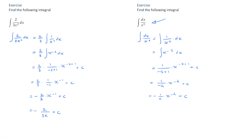We could, of course, go further if we wanted to. We could write this as negative 1 over 4 times 1 over x to the power of 4 plus c, which leads us to negative 1 over 4x to the power of 4 plus c.